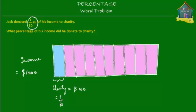We have one tenth as the fraction of his income that he gave to charity. Dividing the block into ten parts is fine if we're only concerned with fractions, but here we have to find the percentage of his income he donated. When we say percentage, we want to find out in terms of 100 — that is, if his income is divided into 100 parts, how many of those 100 parts did he give to charity?